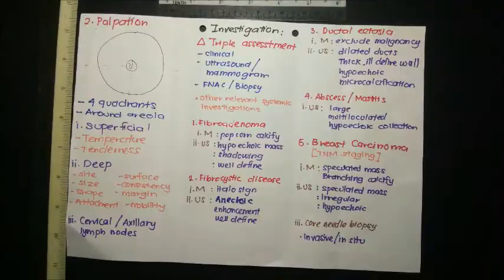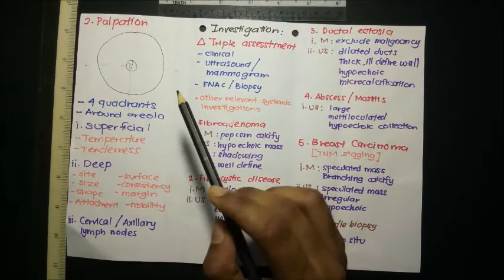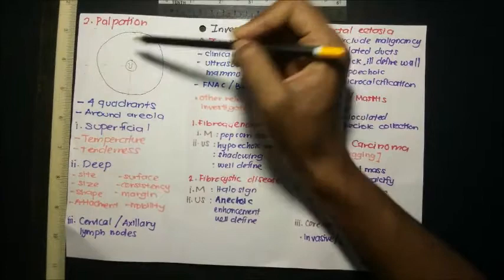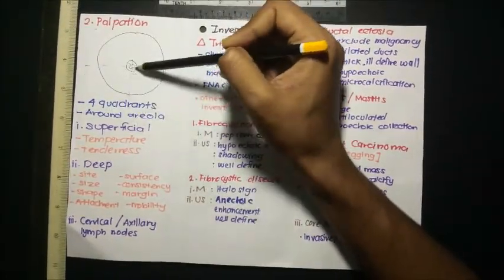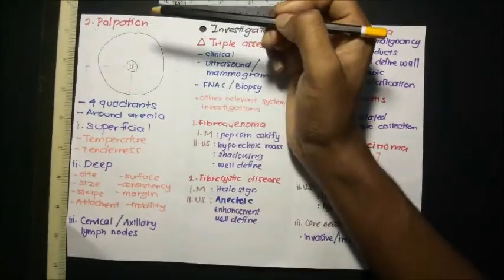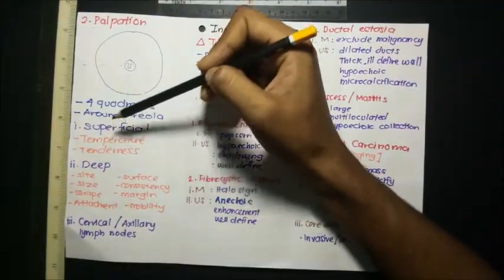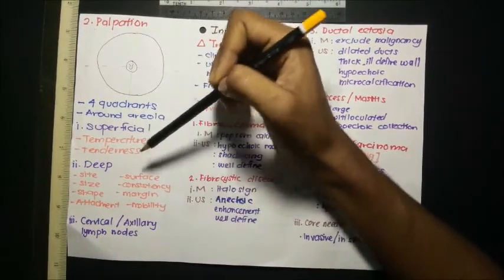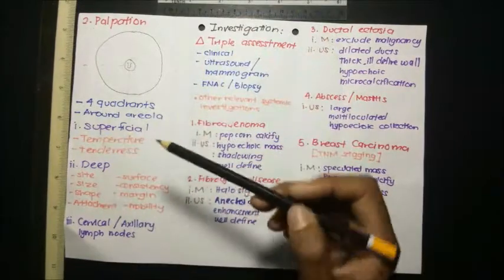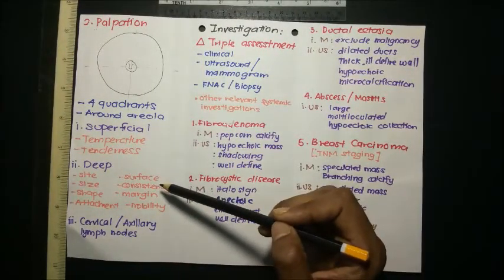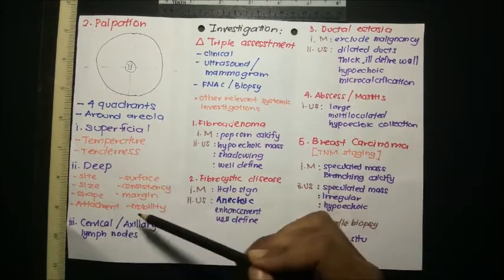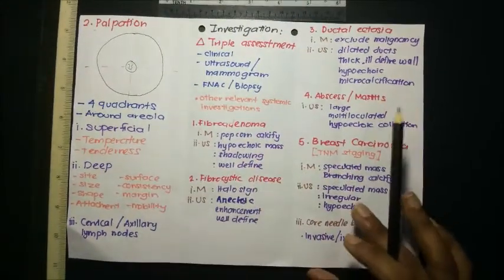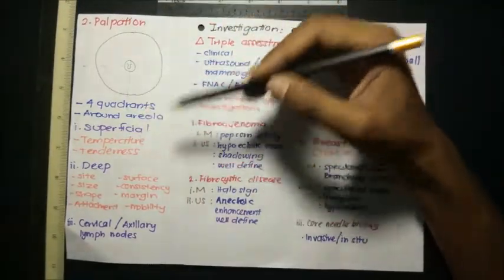For palpation, position the patient at 45 degrees or sitting comfortably. Palpate the four quadrants of the breast and the areolar area. First ask about pain. Superficial palpation checks temperature and tenderness. Deep palpation assesses the swelling: site, number, size, surface, consistency, shape, margin, attachment to skin or muscle, and mobility. After palpation, don't forget to palpate cervical and axillary lymph nodes.